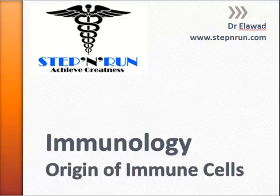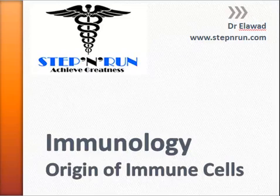Hi guys, it's Dr. Elouad from stepandrun.com and today we'll be continuing our section on immunology. For this lecture we'll be talking about the origin of our immune cells, which is a continuation of hematopoiesis - you can see the previous video where we talked about the location of where hematopoiesis goes on. In this one we'll talk about how all these different types of cells originate and how they differentiate from the hematopoietic stem cell.